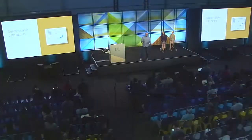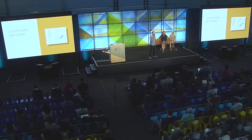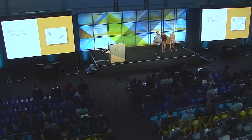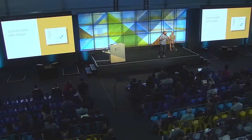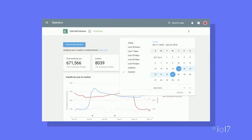Let me walk you through some exciting features of this page. First, you can now choose any date range you want to visualize your data — a nice date picker is available on the top right corner of the page. There are some preselected time ranges, but you can also pick a custom one. Previously, we only had three fixed date ranges that always ended at today.